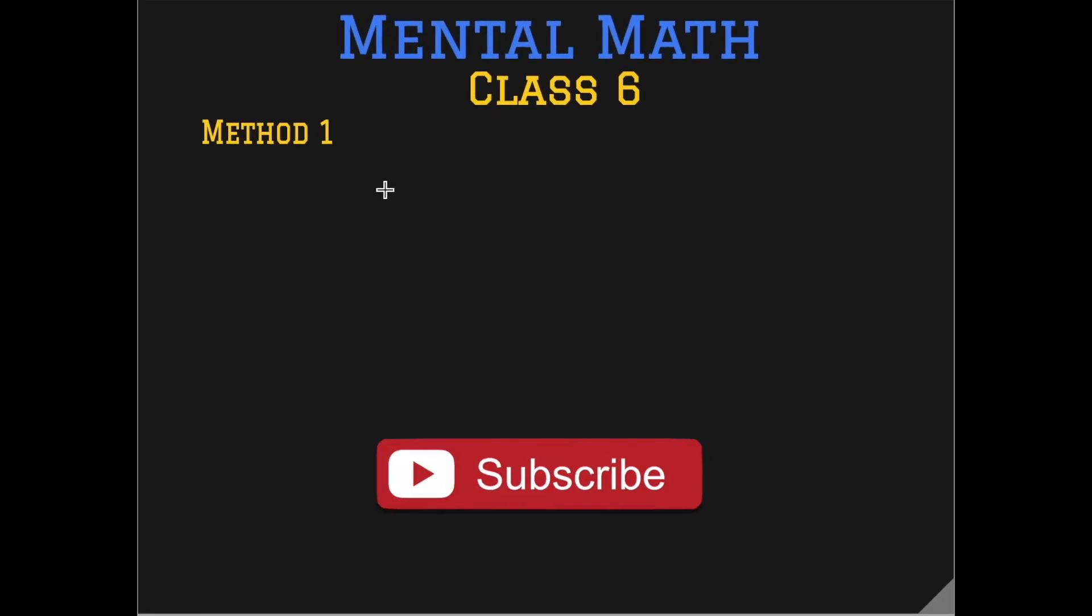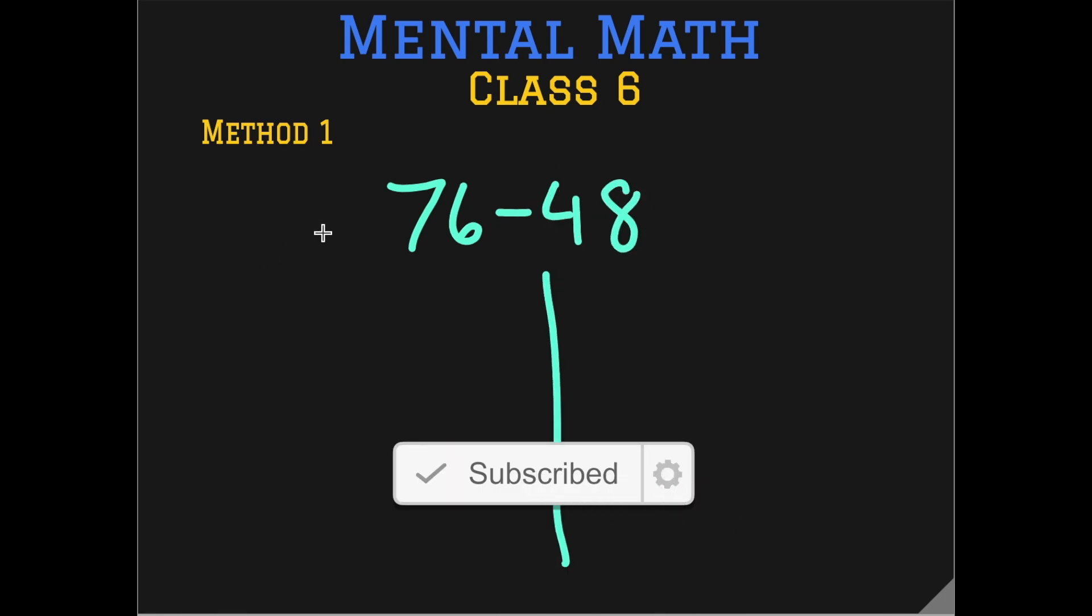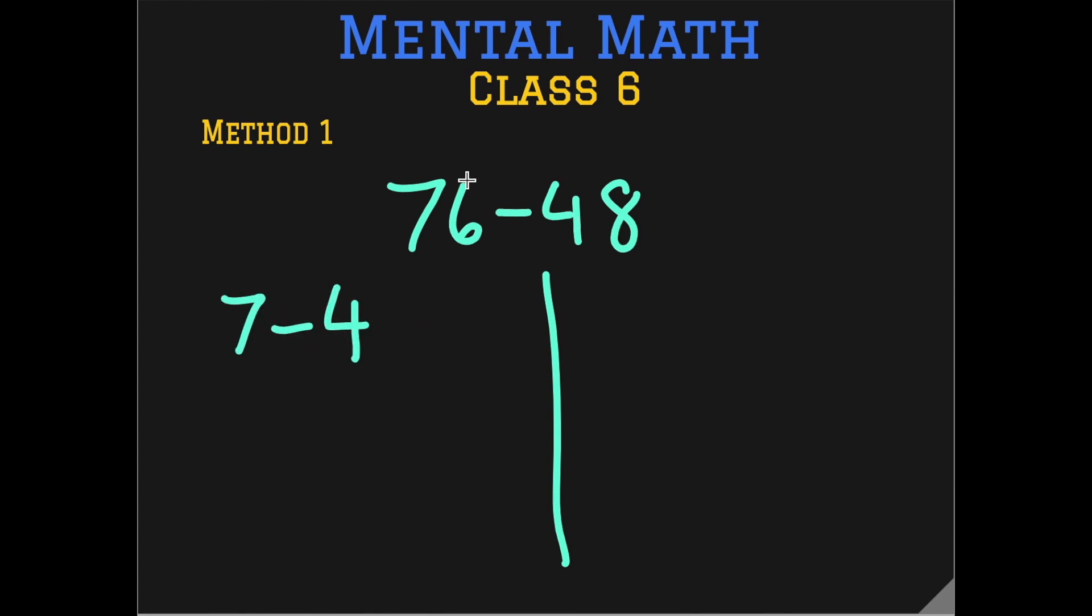Now let's do one more question. 76 minus 48. Split the question. The tens part subtracting separately. So we get 7 minus 4 on one side which is actually 70 minus 40. And then the ones are 6 minus 8. Again we cannot subtract an 8 from 6. So we need to borrow. So we got on the tens part 7 minus 4 is 3 which is actually 30. So we need to borrow a 10 from that 30 and give it to 6. So it becomes a 16. And the 30 becomes a 20. So 16 minus 8 is 8. And our answer is 28.